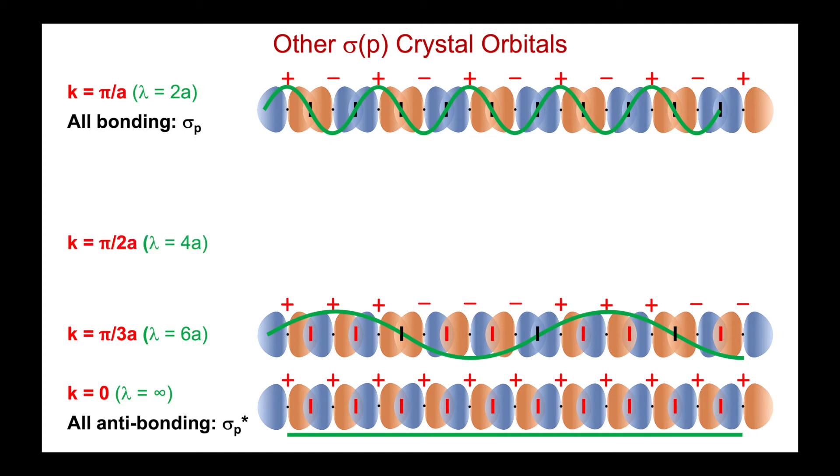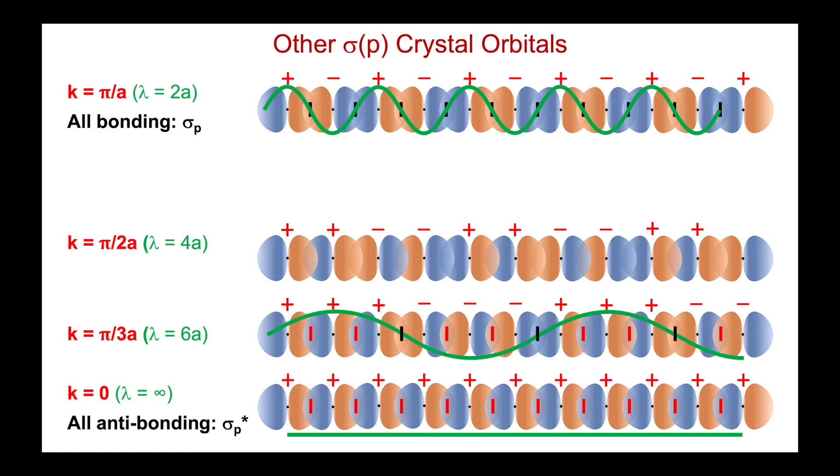Here's one-half pi over a, which before was a non-bonding crystal orbital for the s orbitals. And the same is true here. Here's the sign change, now it's bonding, not anti-bonding. No sign change, anti-bonding. As before, it's a non-bonding crystal orbital with an equal number of in-phase and out-of-phase interactions.